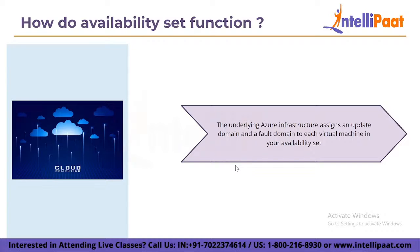Each availability set can have up to three fault domains and up to 20 update domains. Update domains denote groups of virtual machines and underlying real hardware that can be rebooted concurrently. When more than five virtual machines are configured within a single availability set with five update domains, the sixth virtual machine is assigned to the same update domain as the first virtual machine, the seventh to the second, and so on.